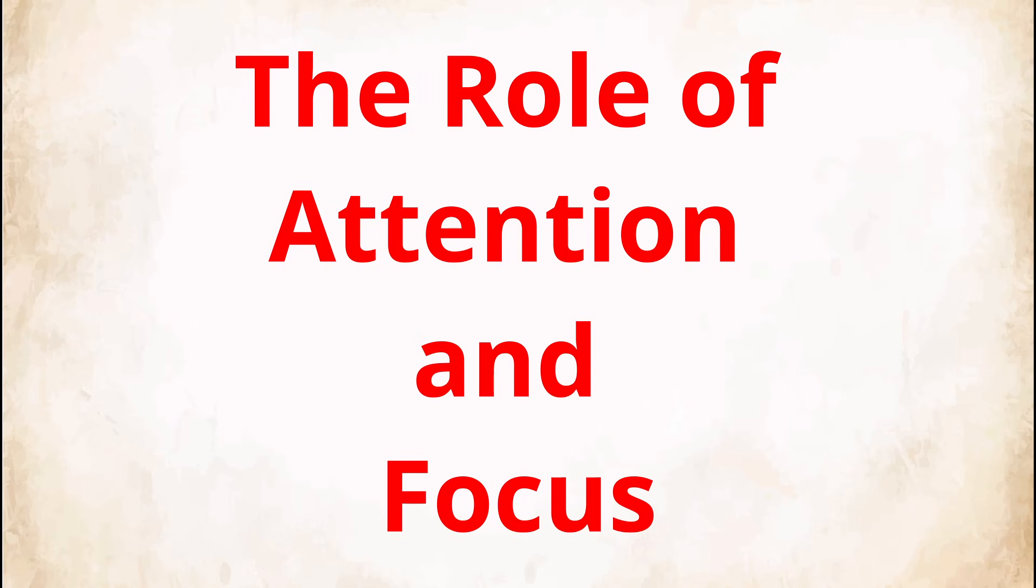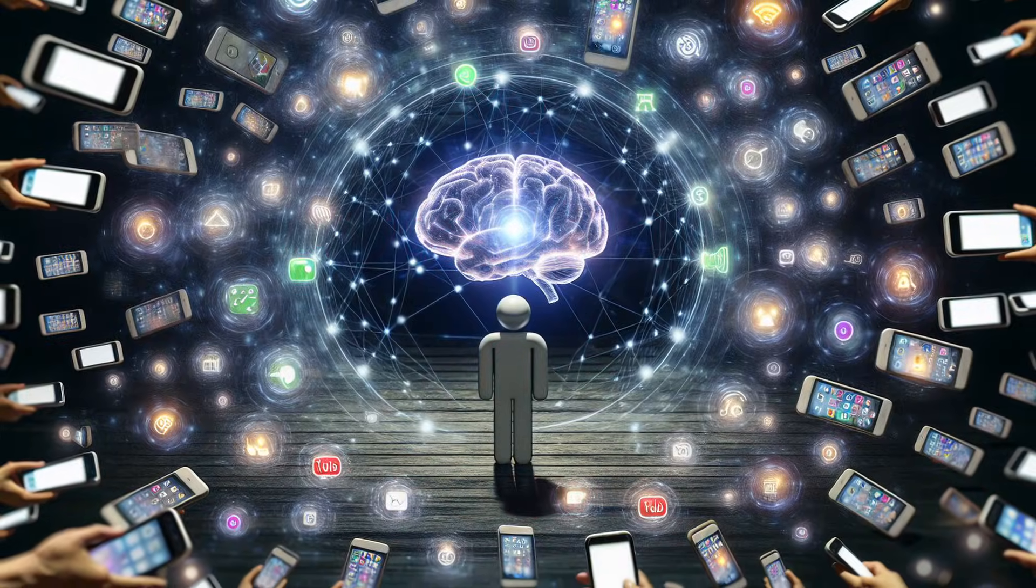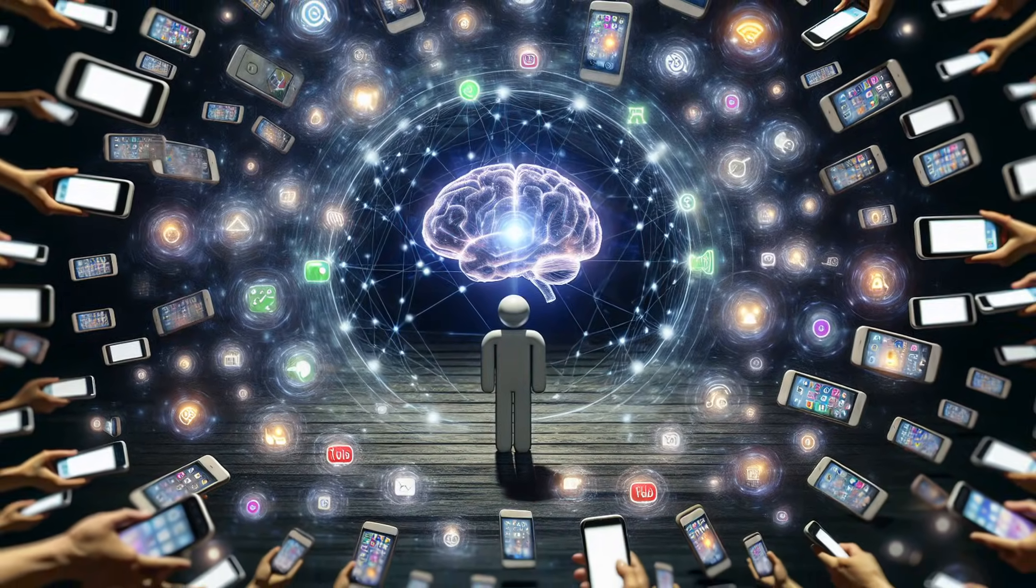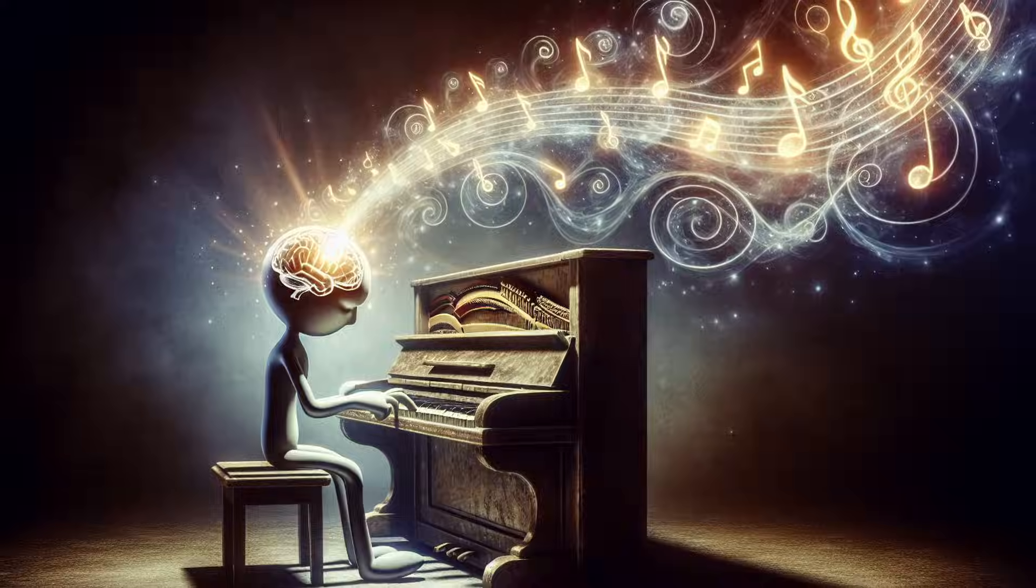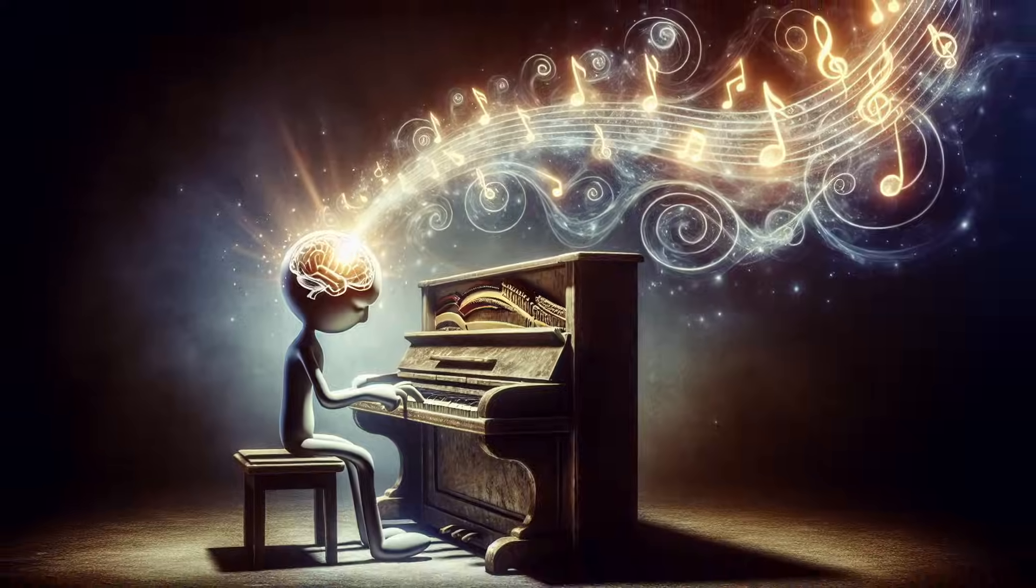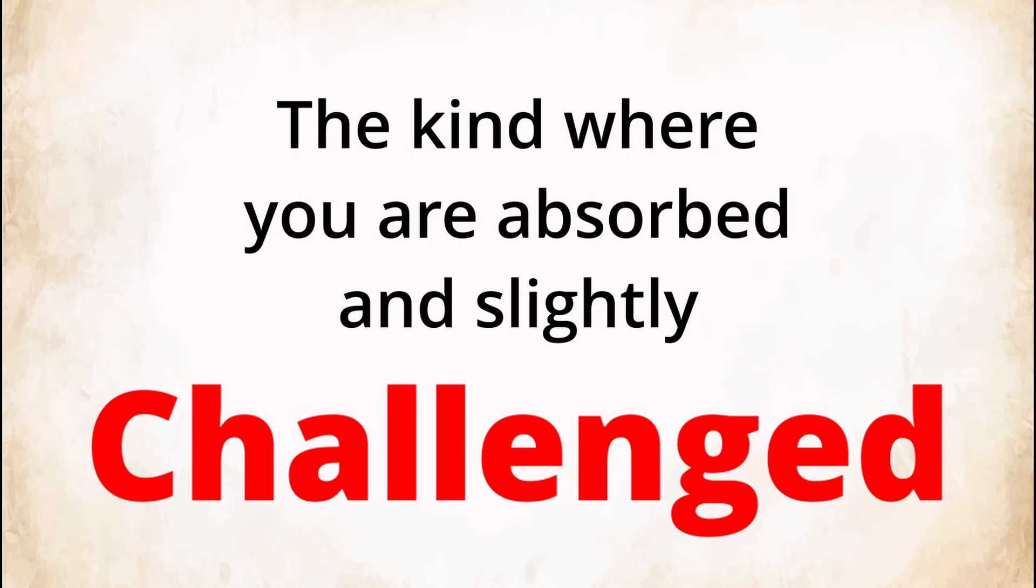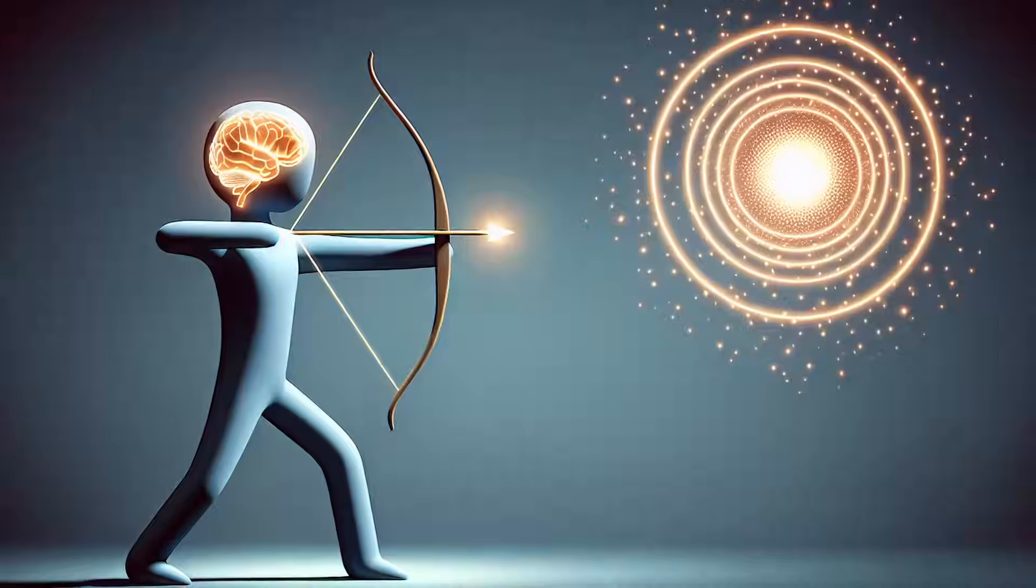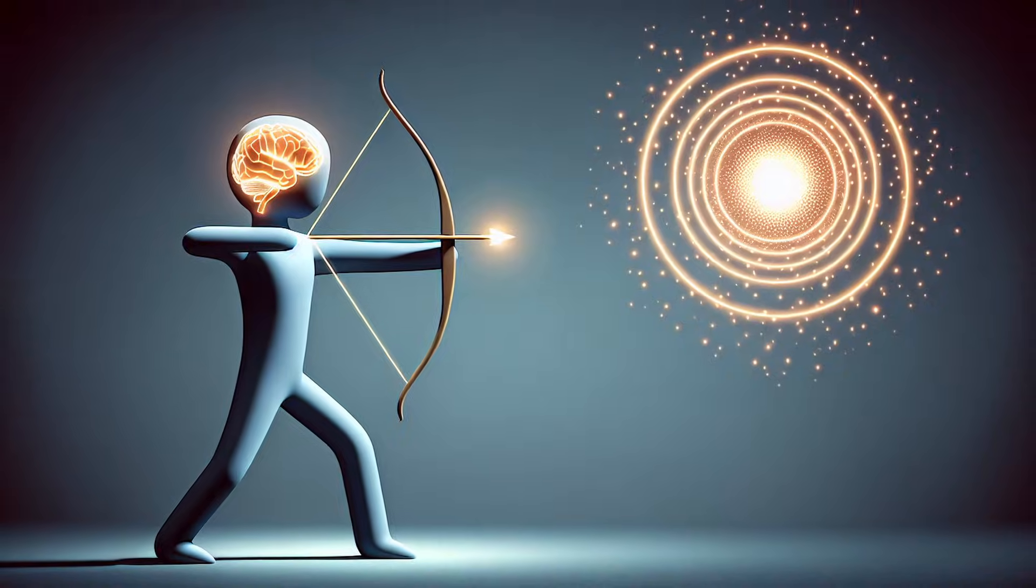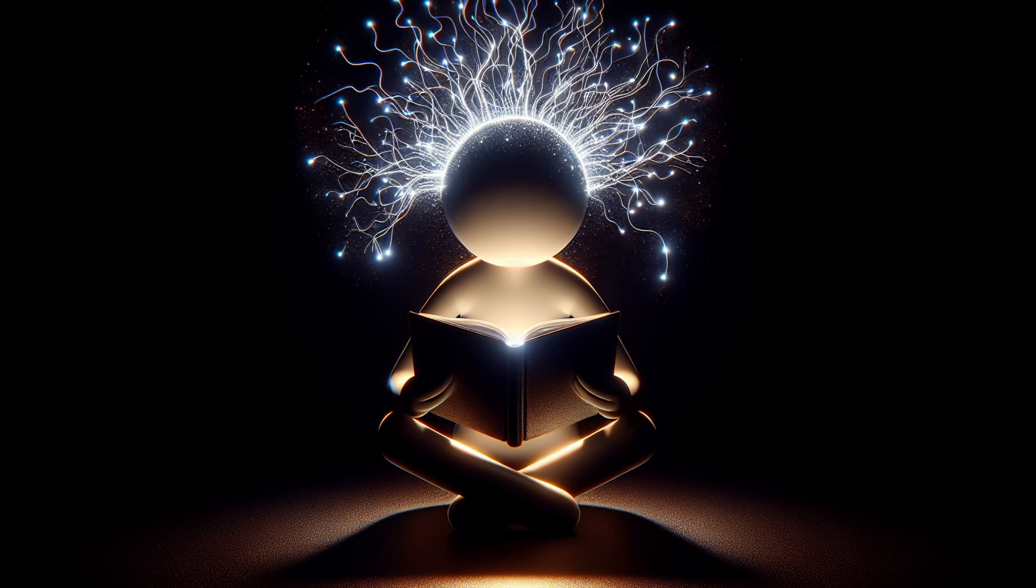The role of attention and focus. One critical factor in rewiring your brain is attention. Multitasking weakens the effect of practice. If you're half-scrolling on your phone while practicing piano, your brain isn't fully engaged, and the neural connections remain weak. Deep practice, the kind where you're absorbed and slightly challenged, supercharges neuroplasticity. When your brain senses that something requires real effort, it tags those neural pathways as important and reinforces them more quickly.